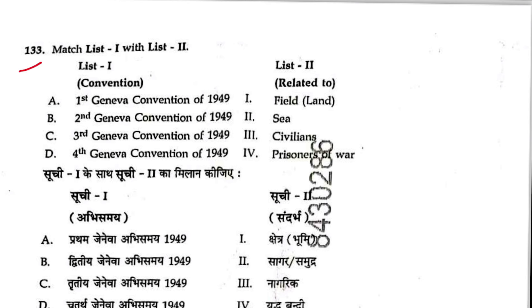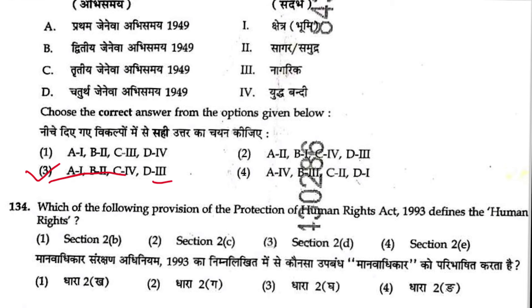Question 133: Geneva Conventions — all four conventions cover the same subjects respectively. First Convention is on wounded and sick on land. Second is on wounded, sick and shipwrecked at sea. Third is on prisoners of war. Fourth is on protection of civilians. Sequence is 1, 2, 4, 3. Answer is 3.